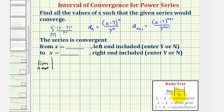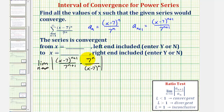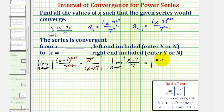Instead of dividing, we'll multiply by the reciprocal of a sub n. So we first have a sub n plus one, then times the reciprocal of a sub n, which would be seven to the n divided by x minus seven to the nth. Simplifying: we have one more factor of seven in the denominator, giving us n plus one factors of seven versus n factors, so this simplifies to one factor of seven. Similarly, we have one more factor of x minus seven in the numerator, simplifying to one factor of x minus seven. So now we have the limit as n approaches infinity of the absolute value of x minus seven divided by seven. Since this is not affected by n, this limit equals the absolute value of x minus seven divided by seven.